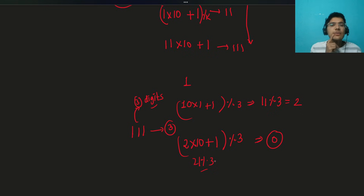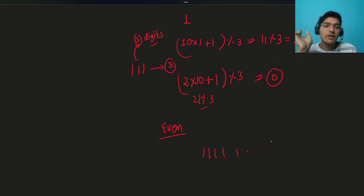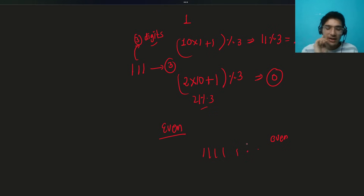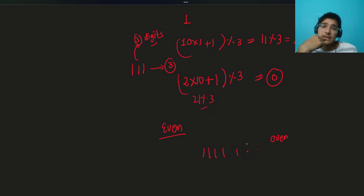But there's also the -1 case. For example, can a number of the form 111...1 be divisible by an even number? No, it cannot. So how do we detect this impossible case? How do we know when it's impossible to form such a number divisible by k?